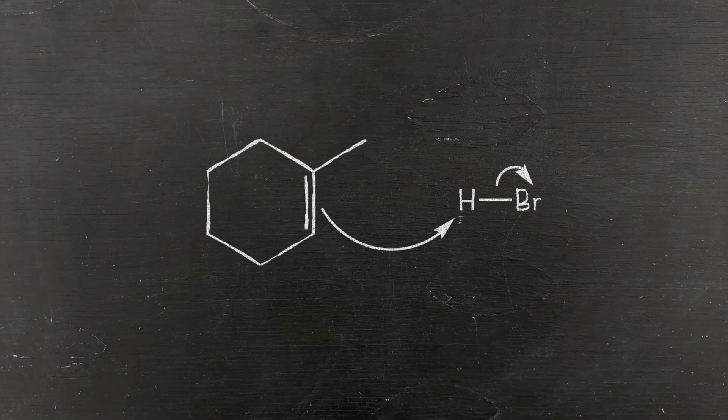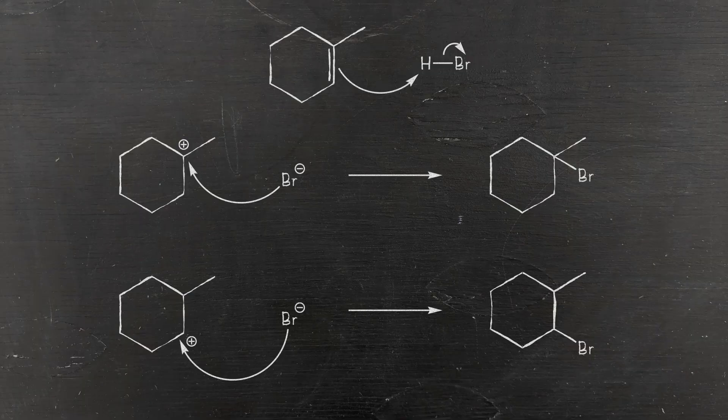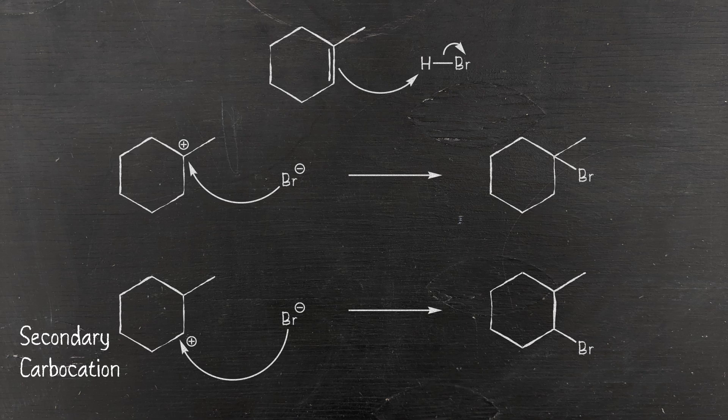The first step of this type of reaction is the double bond breaking and grabbing a proton. When it does so, it generates a carbocation, and this carbocation can either be on the carbon with the methyl group attached to it, or adjacent to it. The adjacent position is what's known as a secondary carbocation, meanwhile the position with the methyl group attached is a tertiary carbocation.